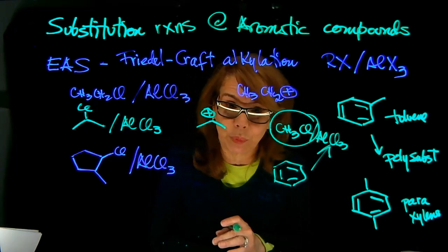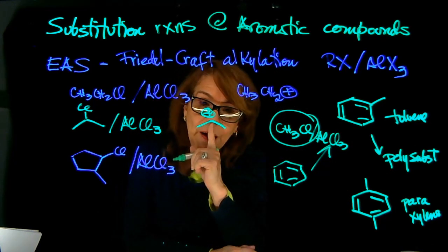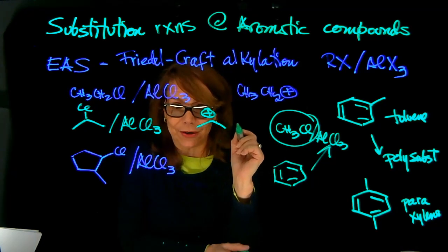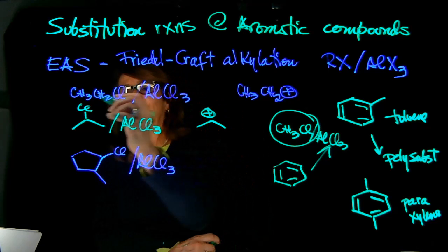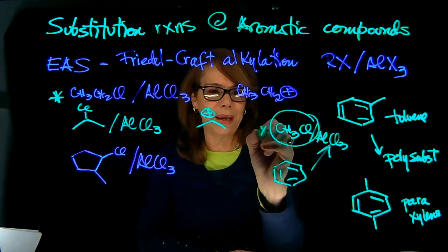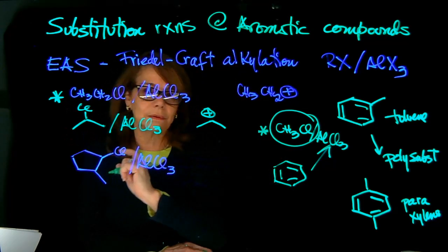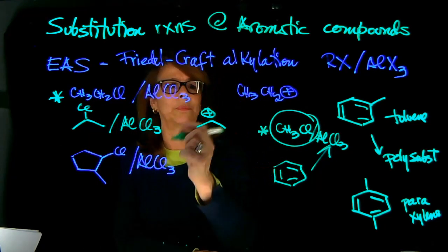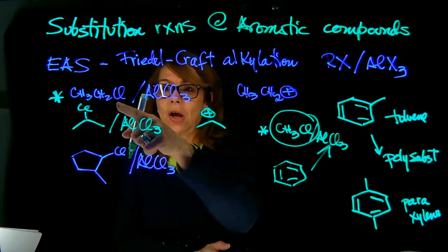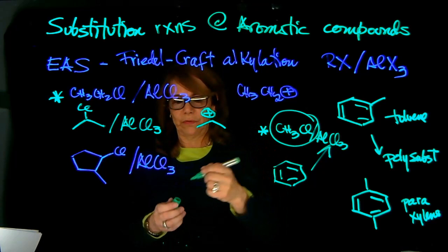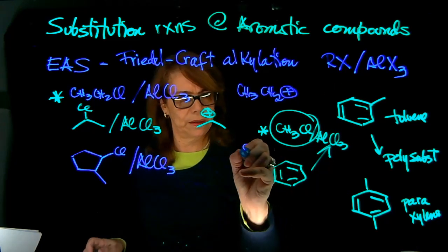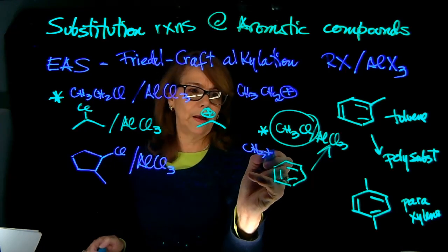We can install the alkyl group, but I need to figure out the way to control that reaction so that I don't create polysubstitution. The other inconvenient that we have with this reaction is carbocation rearrangement. If we have the reaction with something simple, such as methyl chloride or ethyl chloride, it's fine because my electrophile will not rearrange.